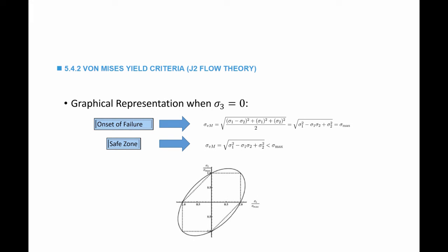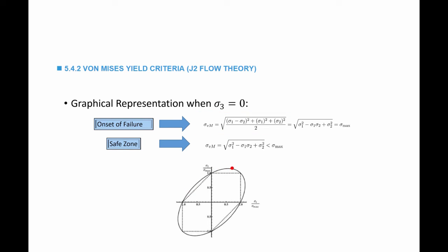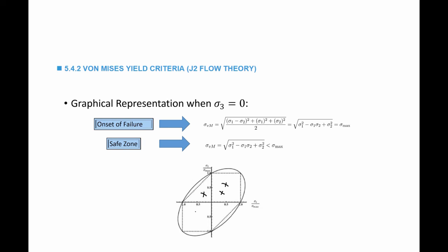The von Mises yield criterion can be represented graphically when sigma 3 is equal to 0. Setting the von Mises stress equation equal to sigma max, I can draw a curve that represents the onset of failure. If a value of sigma 1 and sigma 2 gives a point on this curve, the material is about to fail. The safe zone is represented by points inside this surface. Notice the dotted line here is actually the Tresca yield surface, and you can see that whether using the von Mises or Tresca criterion, they give almost the same response.